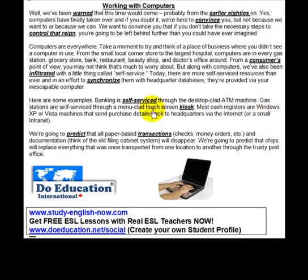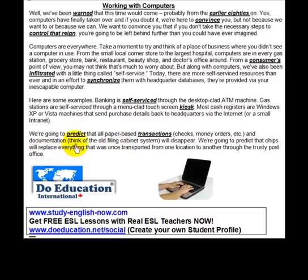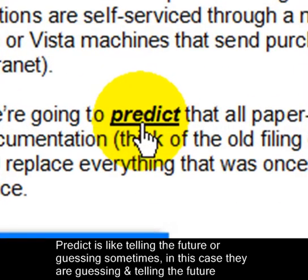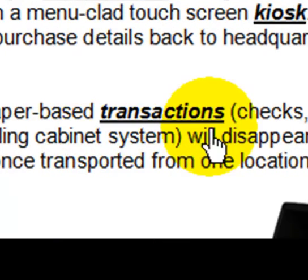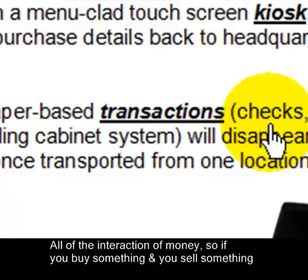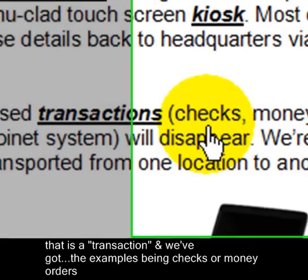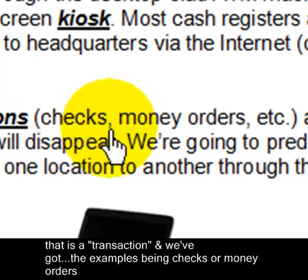Most cash registers are Windows XP or Vista machines that send purchase details back to headquarters via the internet. We're going to predict that all paper-based transactions — checks, money orders, etc. — and documentation, like the old filing cabinet system, will disappear. 'Predict' is like telling the future or guessing. 'Transactions' would mean all the interaction of money — if you buy something and you sell something, that is a transaction.